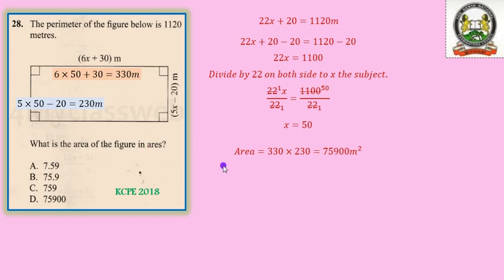Now that the area is supposed to be given in acres, we have to remember that 1 acre is equal to 100 meters squared. And therefore whatever we have obtained up here, we shall have to convert to acres by dividing by 100. And once you divide 75,900 by 100, you will be left with 759 acres, which will now be the area of that figure in acres.